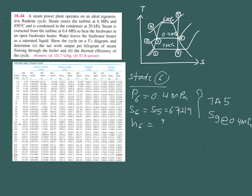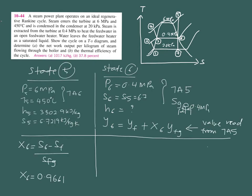The value of Sg is 6.8955, which is greater than S6, meaning state 6 is still in a mixture region — it doesn't exceed the saturated vapor line. To find H6, use the general equation: Y6 equals YF plus X6 times YFG, where Y stands for either H or S depending on what you are looking for. Using this equation, you obtain X6, then plug it in to find H6. Remember HF, HFG, SF, and SFG must be read from table E5 at P6 equals 0.4 MPa.